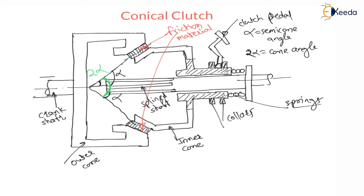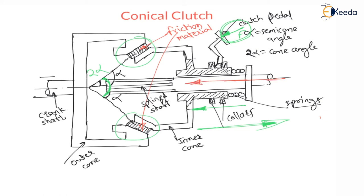Whenever force is applied on the pedal, the inner cone will move towards the right and the clutch will be disengaged. Whenever this force is released, because of spring force the inner cone moves towards the left and the clutch will get engaged again. The springs are applying force in the axial direction along the axis. This is the spring force, which is the axial reaction W.